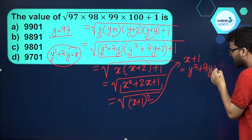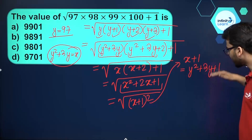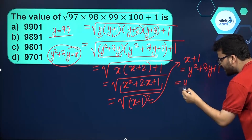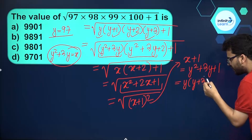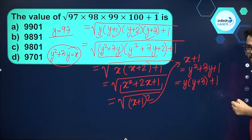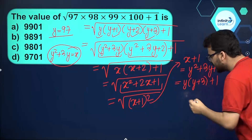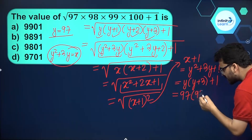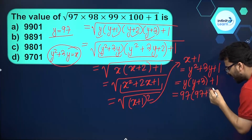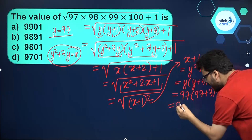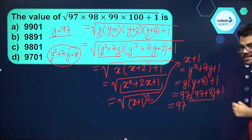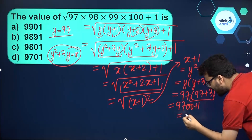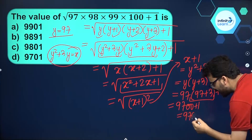Now y was 97. So instead of substituting directly and wasting time, we simplify: y² + 3y + 1 = y(y+3) + 1. With y = 97, we get 97 × (97+3) + 1 = 97 × 100 + 1 = 9700 + 1 = 9701.